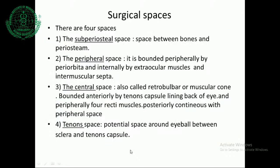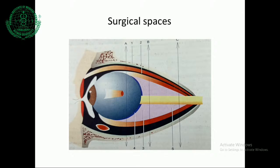Coming to the surgical spaces — there are four spaces. The subperiosteal space is between the bones and periosteum. The peripheral space is bounded peripherally by periorbita and internally by extraocular muscles and intermuscular septa. The central space, also called the retrobulbar or muscular cone, is bounded anteriorly by Tenon's capsule and peripherally by the four recti muscles, posteriorly continuing with the peripheral space. The last space is the Tenon space — a potential space around the eyeball between the sclera and Tenon's capsule.